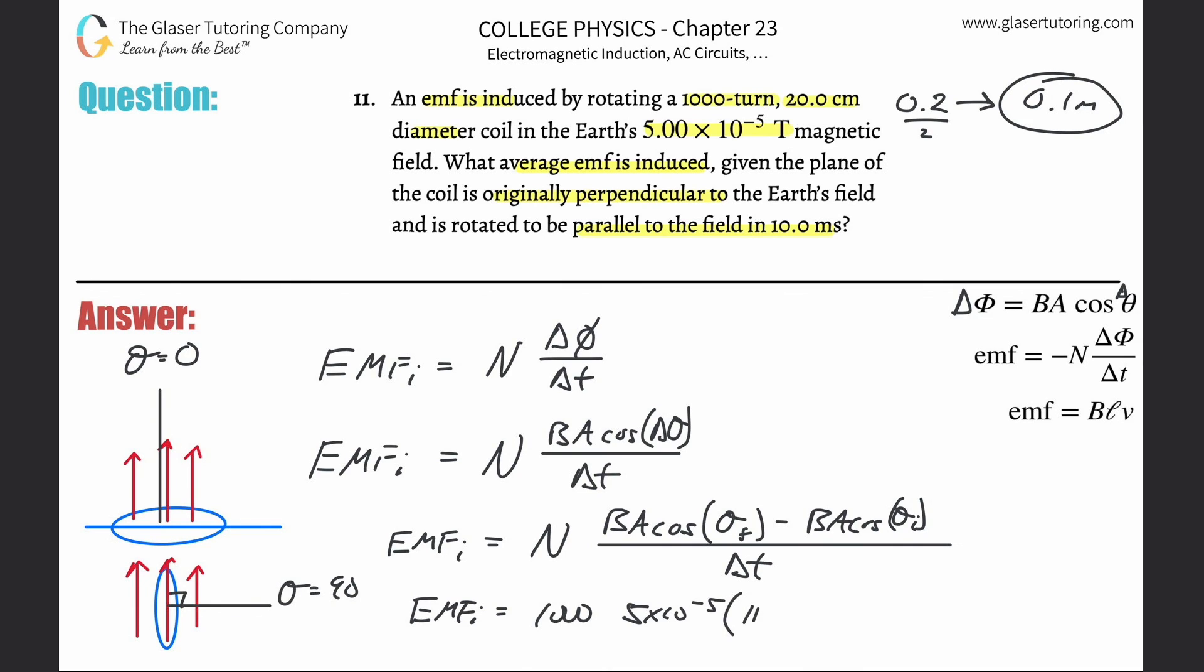So now the area of a circle is pi r squared, so it's going to be pi times 0.1 squared. Now multiply that all by my cosine of 90 minus the cosine of 0.